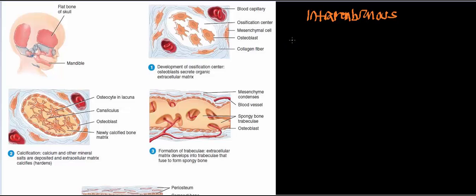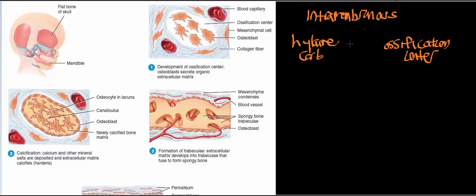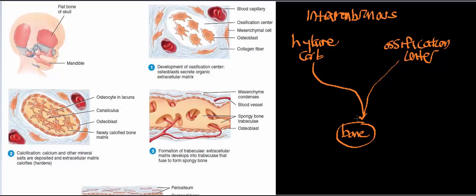Keep in mind what we started with in the last video: hyaline cartilage. In intramembranous ossification, we're simply going to start with an ossification center, and ultimately get to the same endpoint — a functional mature bone. In endochondral ossification, we did have cartilage, and we were talking about all the bones beneath the skull, with the exception of the clavicle.